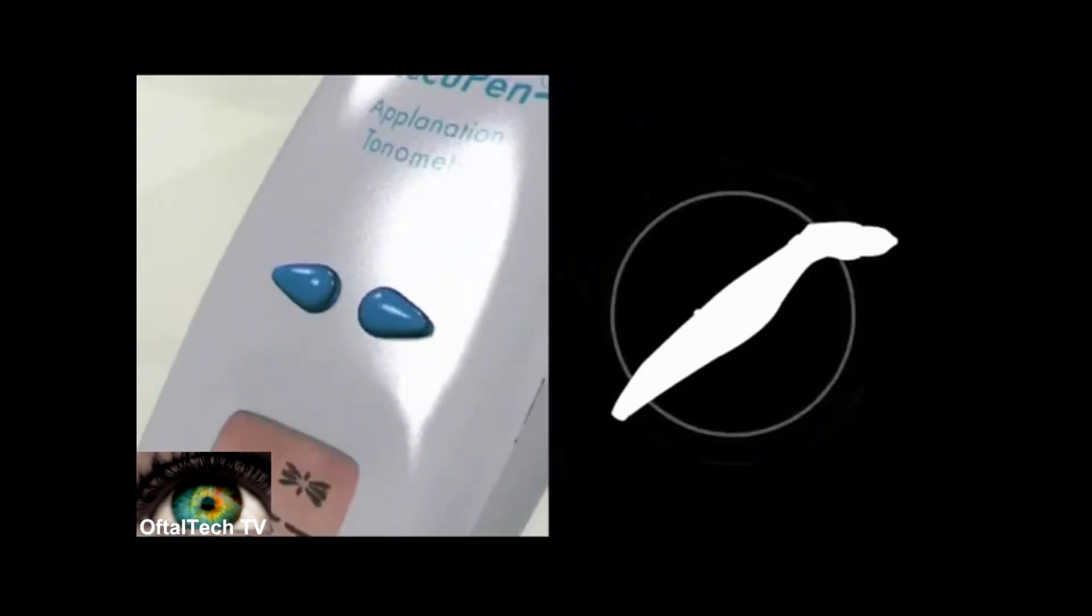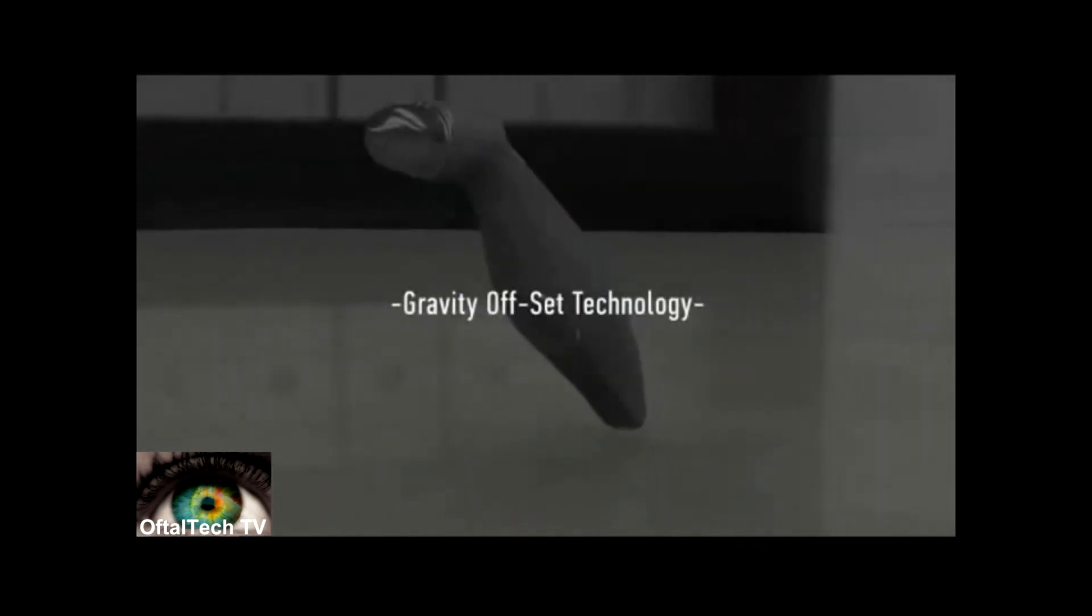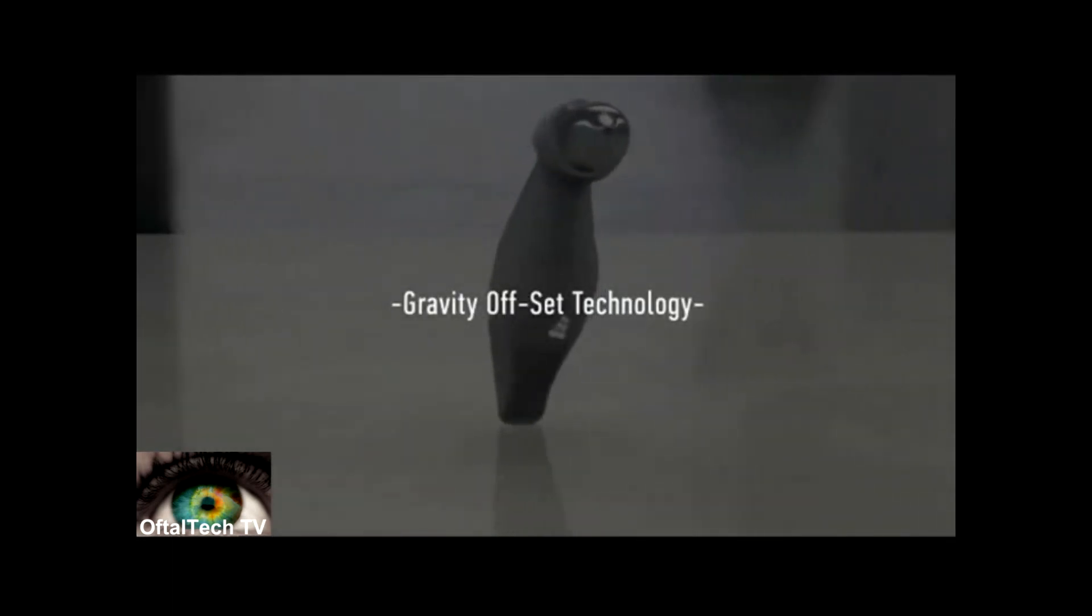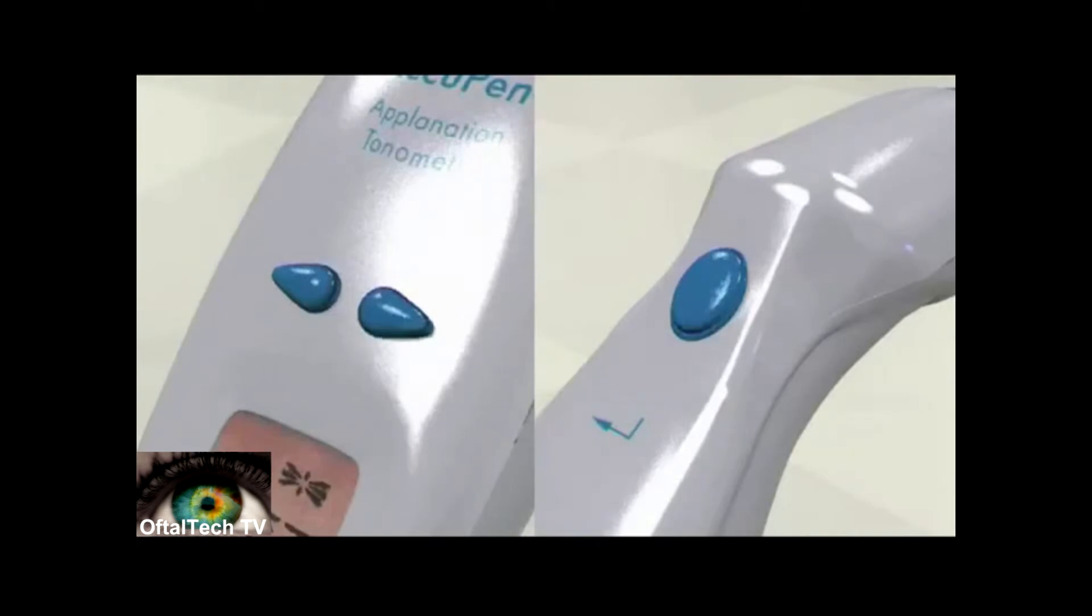The AccuPen features gravity offset technology, eliminating the need to calibrate your instrument frequently. When calibration is necessary, simply hold the up arrow and action button simultaneously for three seconds until the probe HORIZ display screen appears.